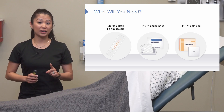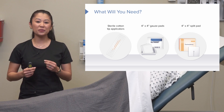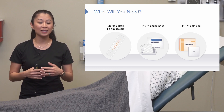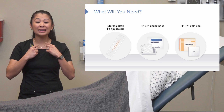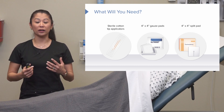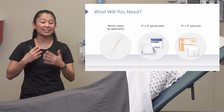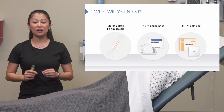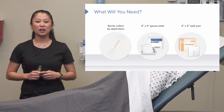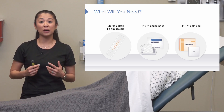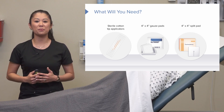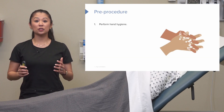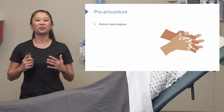One important thing about gauze pads — you can see the weaving on them. We do not want to leave those around the patient's airway. All those little filaments, if you cut into it, can get into the patient's airway. We actually have a special gauze pad called a tracheostomy sponge or a four-by-four split pad especially for that purpose.